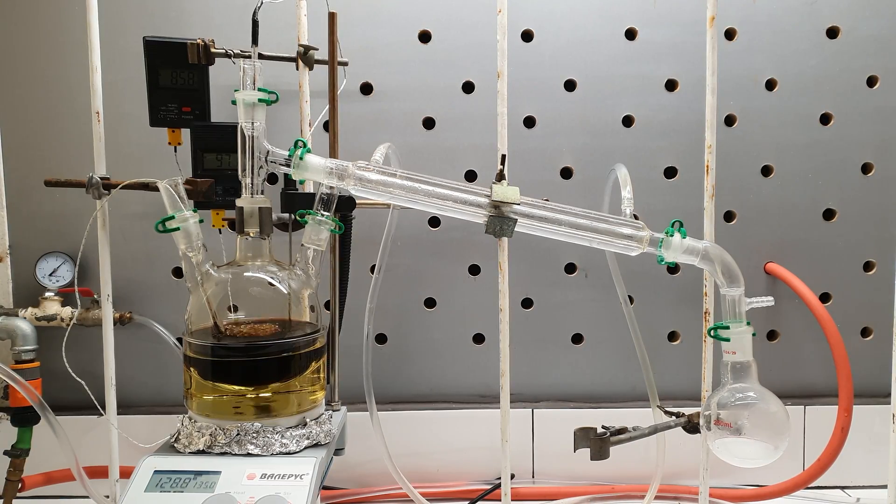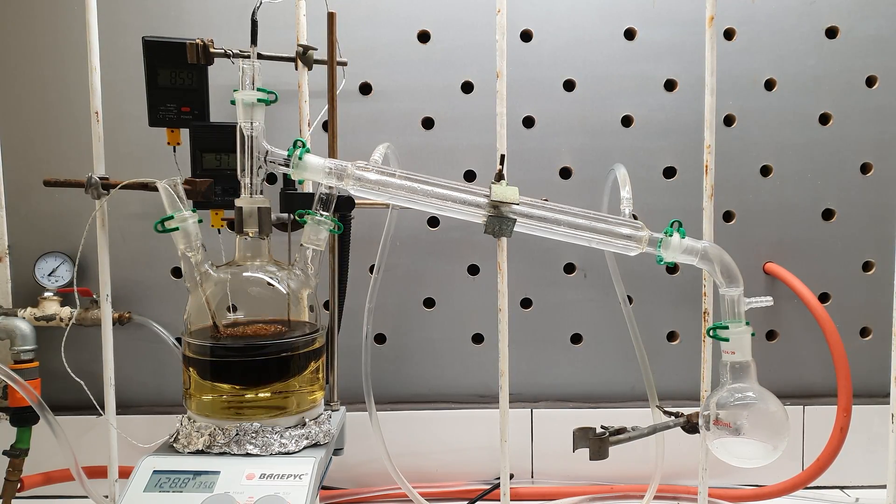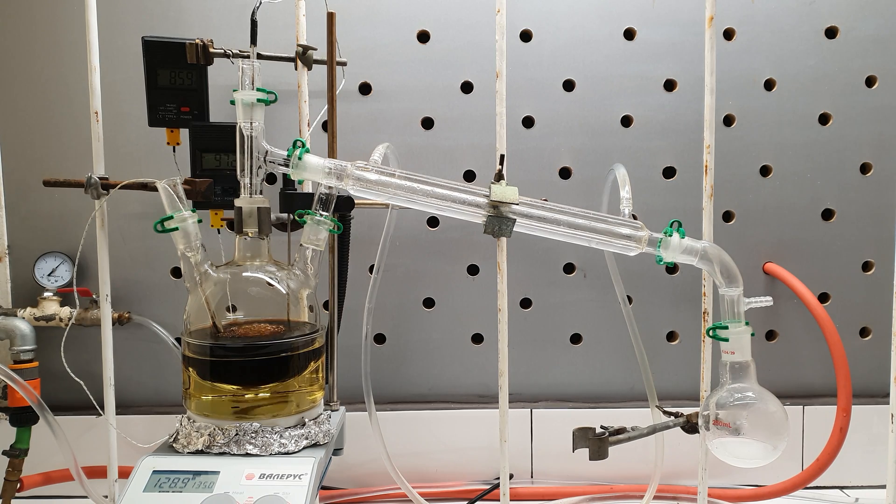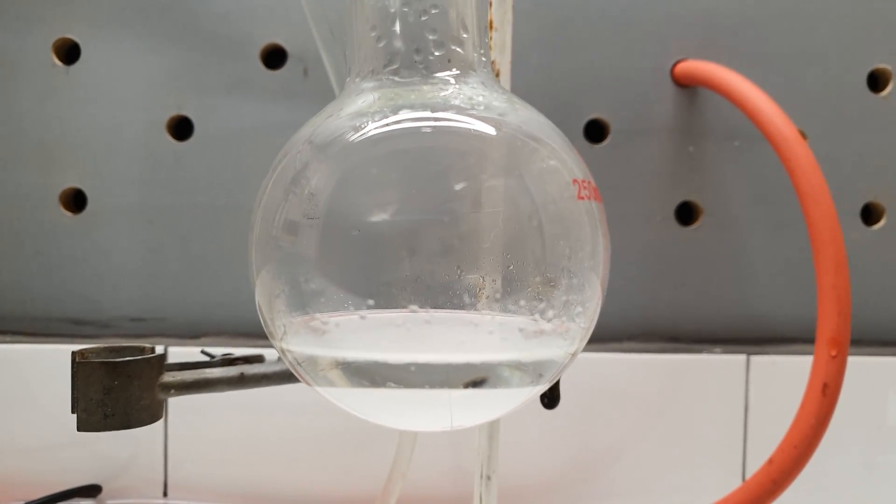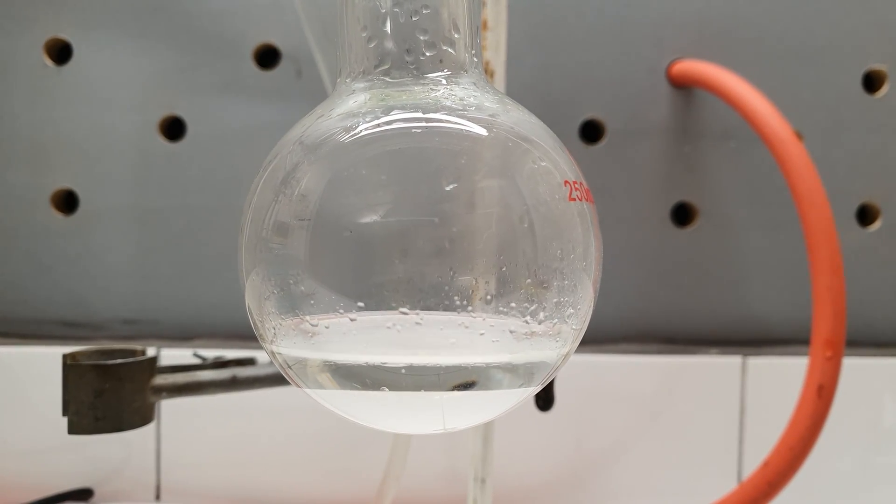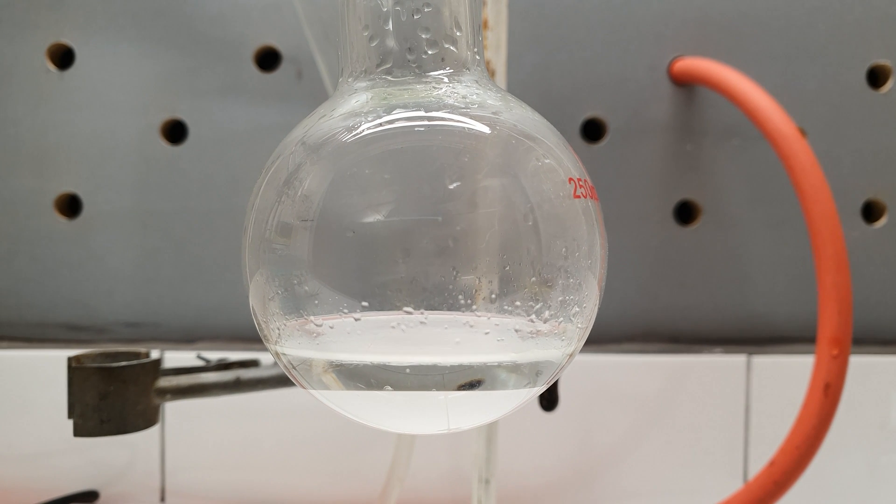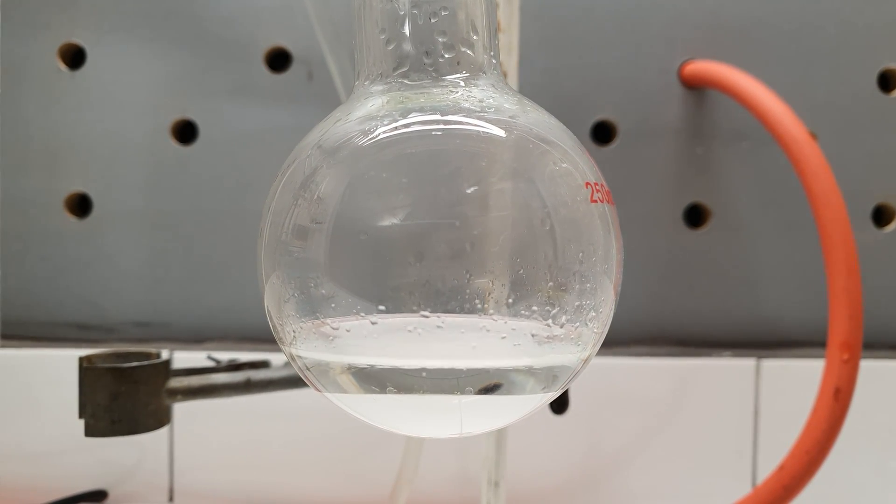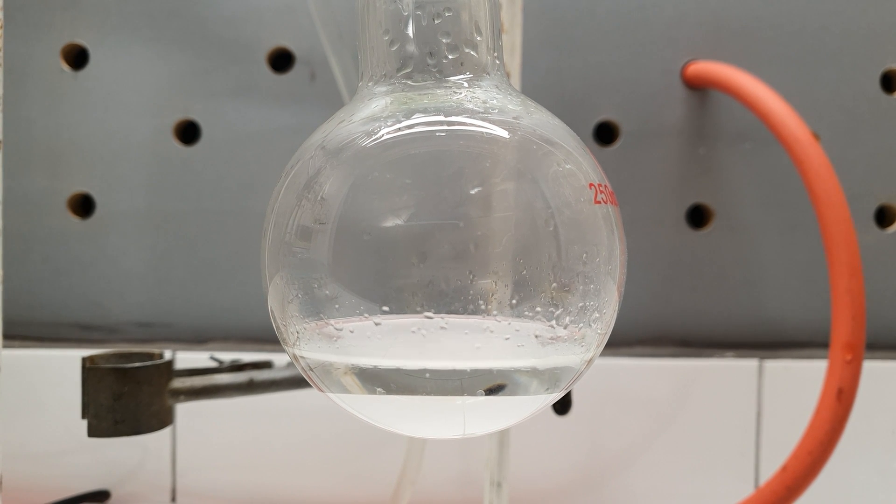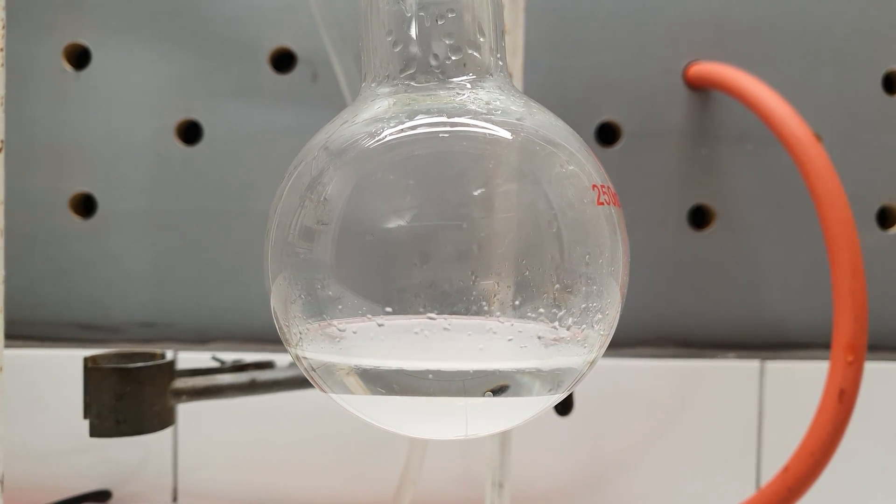This is not mandatory, but I did it to achieve more precision and prevent the reaction from foaming over. When about 50 ml had distilled, a very clear layer separation took place in the receiver. The lower, milky layer was the nitromethane and the upper, clear layer was water.